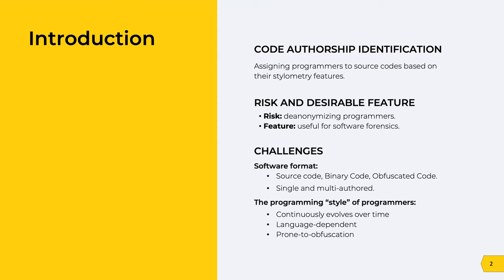On the other hand, identifying programmers may have privacy implications for programmers who wish to remain anonymous when contributing to open source projects. Working on software authorship attribution is very challenging. Software samples can come with different formats, languages, sizes, and either made by a single or multiple programmers. Coding style can be language-dependent, meaning it changes from one language to another. However, the coding style can also be continuously evolving and can be hidden by obfuscation.